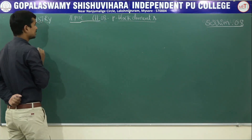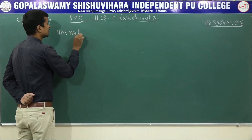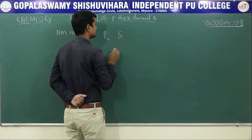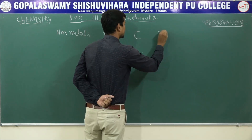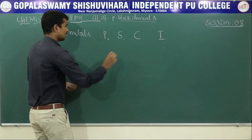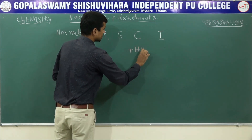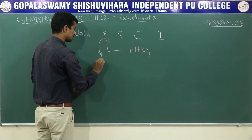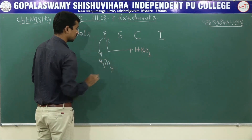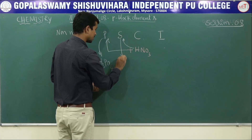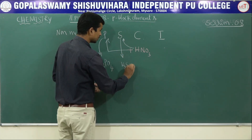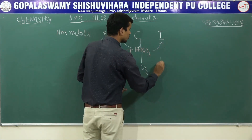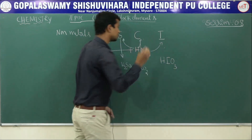The next property is the reaction of HNO3 with non-metals such as phosphorus, sulfur, carbon, and iodine. HNO3 oxidizes phosphorus to phosphoric acid H3PO4, sulfur to sulfuric acid H2SO4, carbon to carbon dioxide CO2, and iodine to iodic acid HIO3.